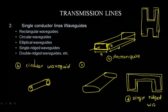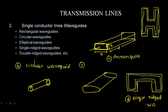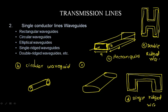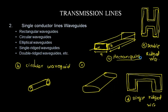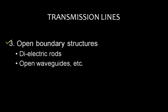Out of all waveguide types, we are going to concentrate on the rectangular waveguide. The third type of transmission line is the open boundary structure, which supports hybrid modes — these include dielectric rods and open waveguides. This completes the classification of transmission lines into three types: multi-conductor lines, single-conductor waveguides, and open boundary structures.